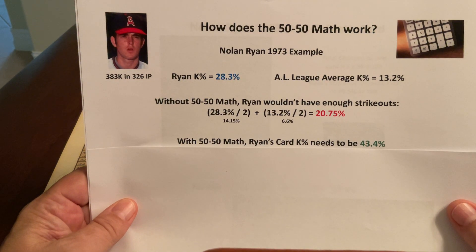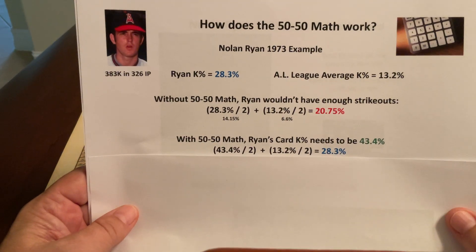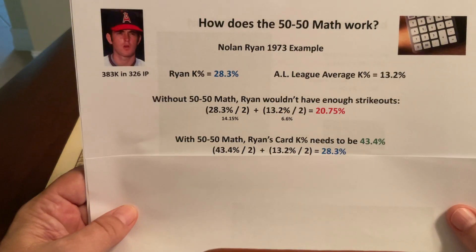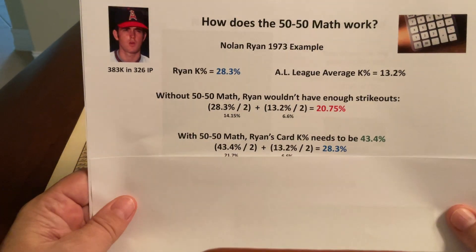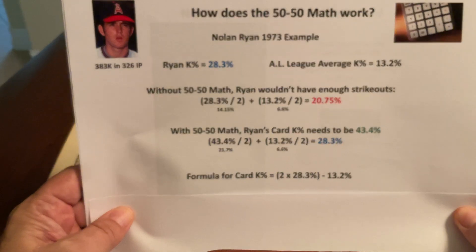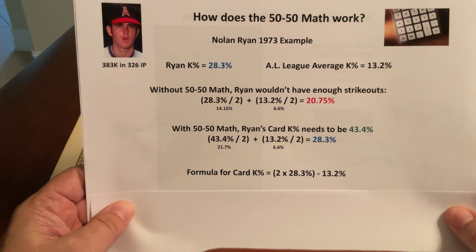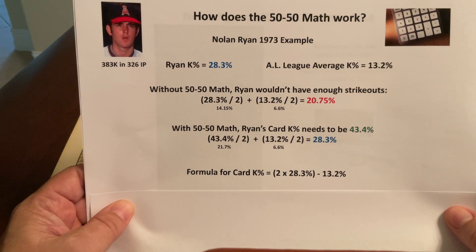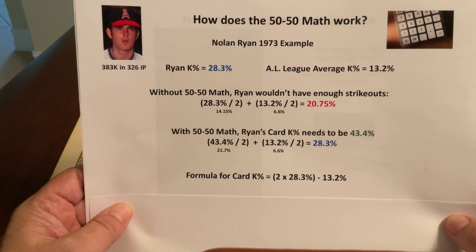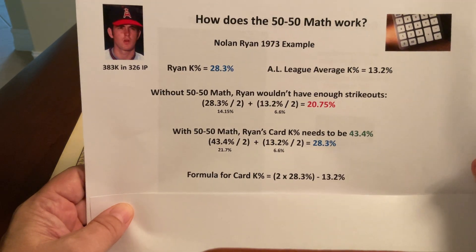So you do have to do what I call 50-50 math to figure out the right percentage allocation to put on Nolan Ryan's card for strikeouts. As it turns out, it needs to be a lot higher — his strikeout percent actually needs to be 43% of his chances on his card. This is the proof: if it is 43.4% half the time and 13.2% the other half the time, when you blend that together it comes out to 28.3%. The shortcut formula is: you double his strikeout rate and then subtract the league average rate. If you do some algebra you may come up with a slightly different form, but you'll get the same answer.